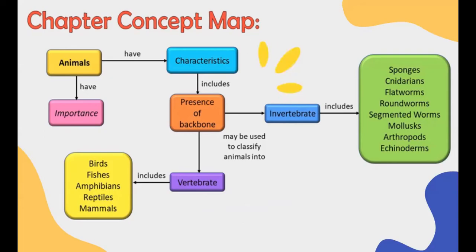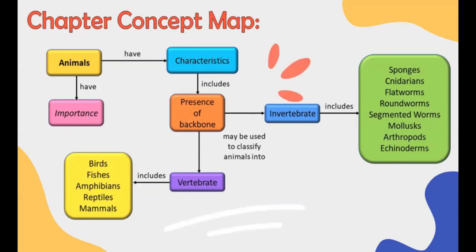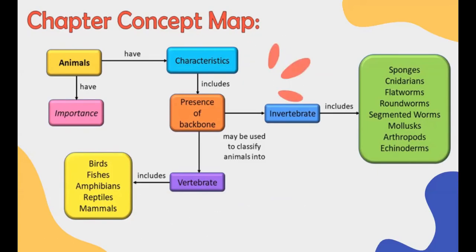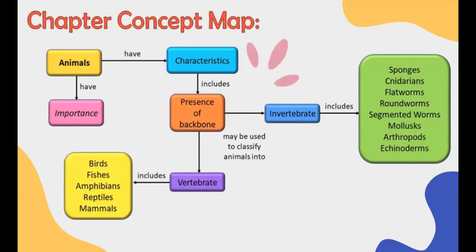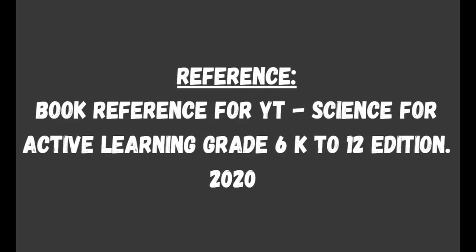Let's summarize everything using our chapter concept map. Animals have characteristics which include the presence of backbone, which may be used to classify animals into vertebrates and invertebrates. Invertebrates include sponges, cnidarians, flatworms, roundworms, segmented worms, mollusks, arthropods, and echinoderms. Vertebrates include birds, fishes, amphibians, reptiles, and mammals.